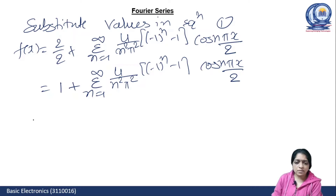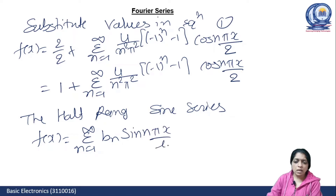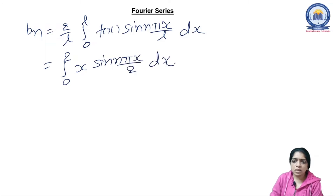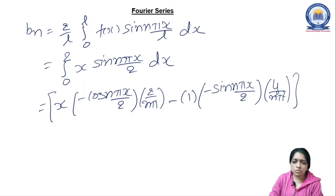Now for the half range sine series: f(x) = summation n=1 to infinity of bₙ sin(nπx/L). The formula for bₙ is (2/L) ∫₀ᴸ f(x) sin(nπx/L) dx. With L = 2, both 2's cancel, limits 0 to 2, integrating x · sin(nπx/2) dx. Applying the u·v rule: x stays, integration of sin gives −cos(nπx/2) · (2/nπ).